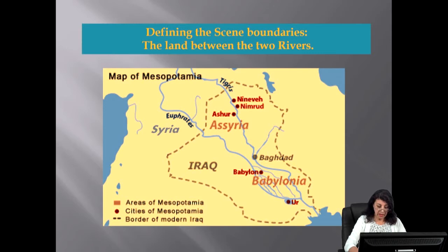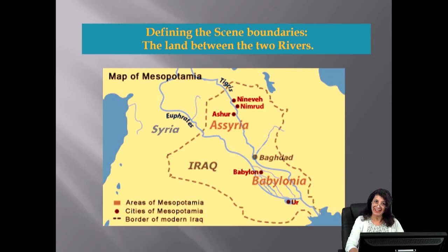Mesopotamia is widely known as the land between the two rivers, the Tigris and the Euphrates. It covers all modern Iraq and the northeastern part of Syria, bounded by the Euphrates to its west. This geographical region has been differentiated by scholars ecologically and culturally into two zones: lower and upper Mesopotamia.